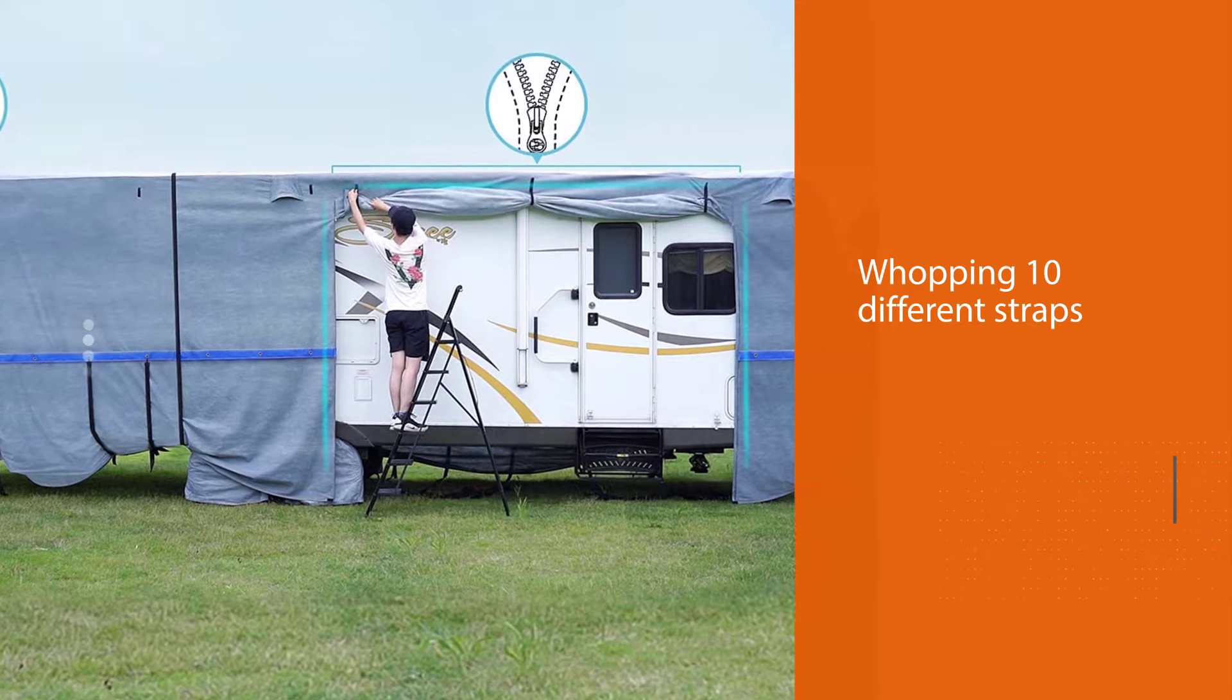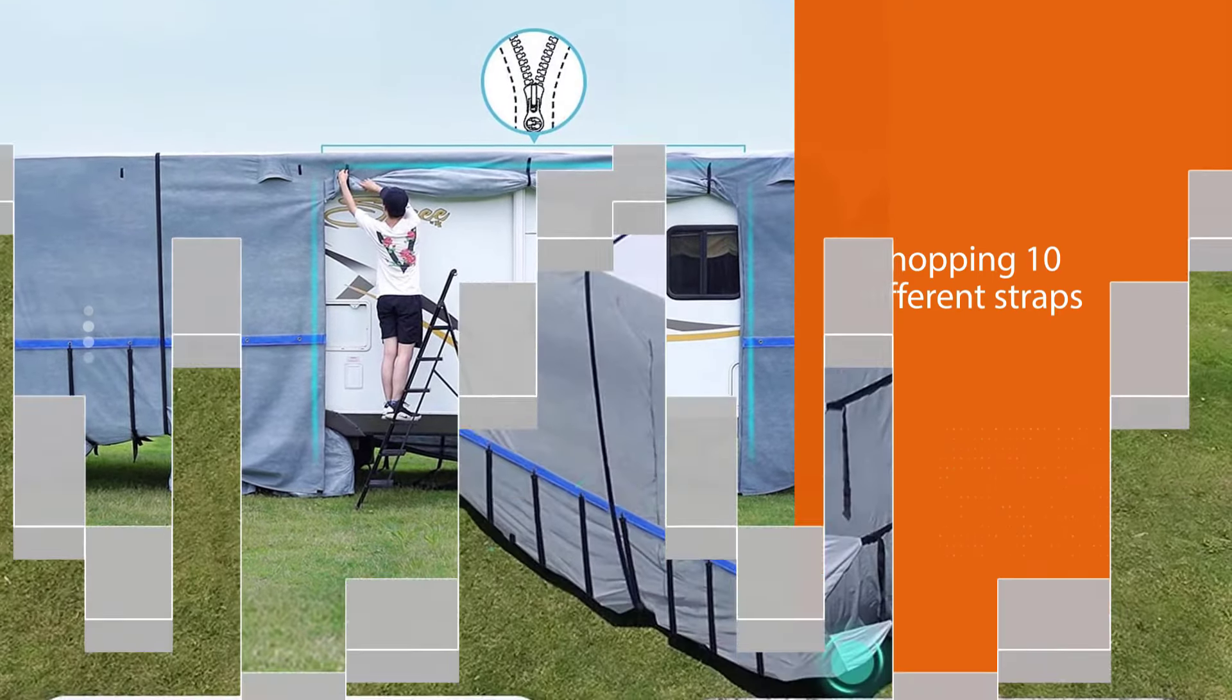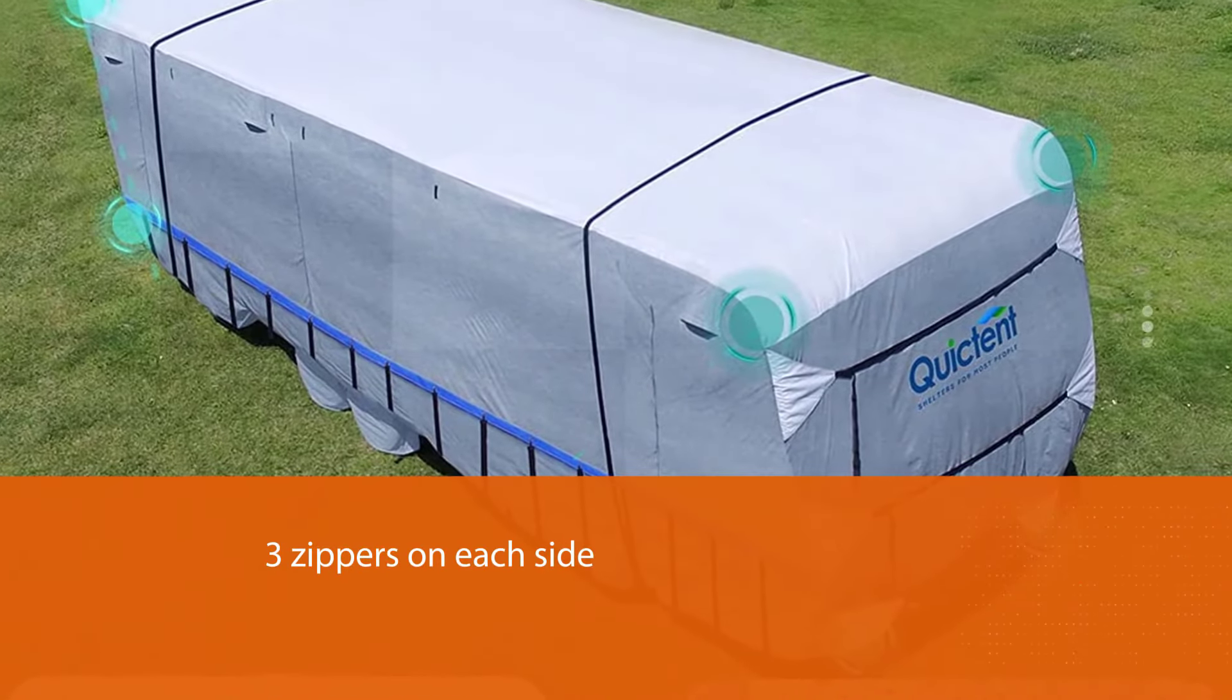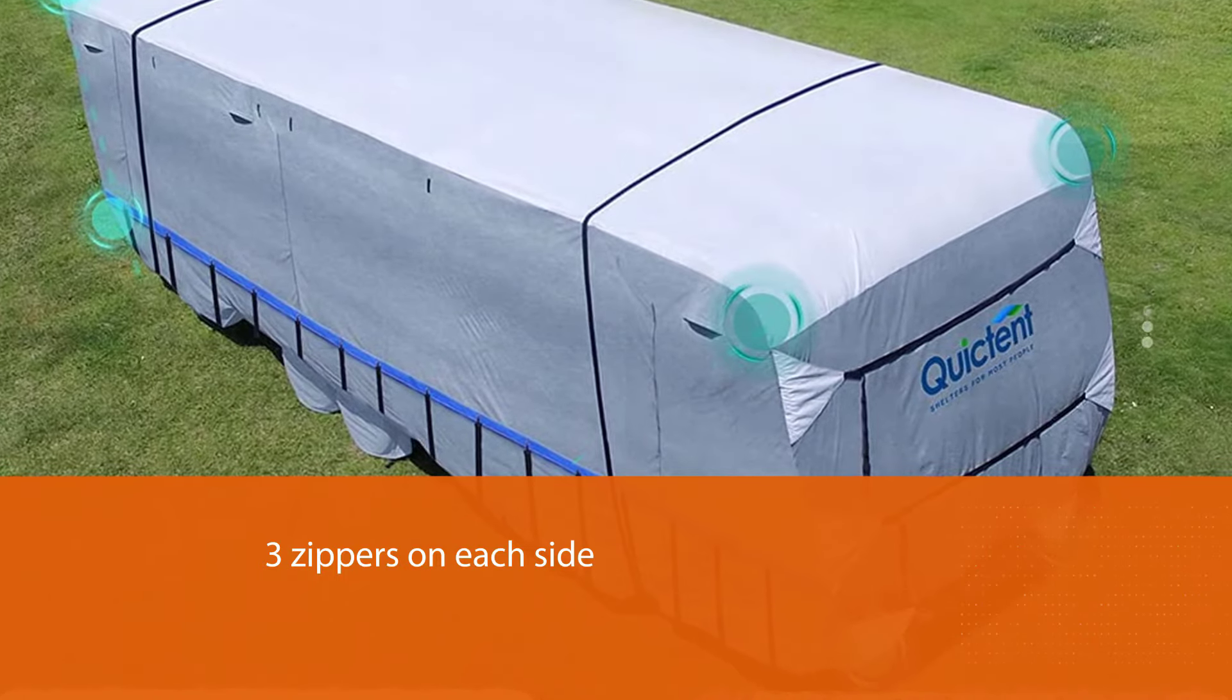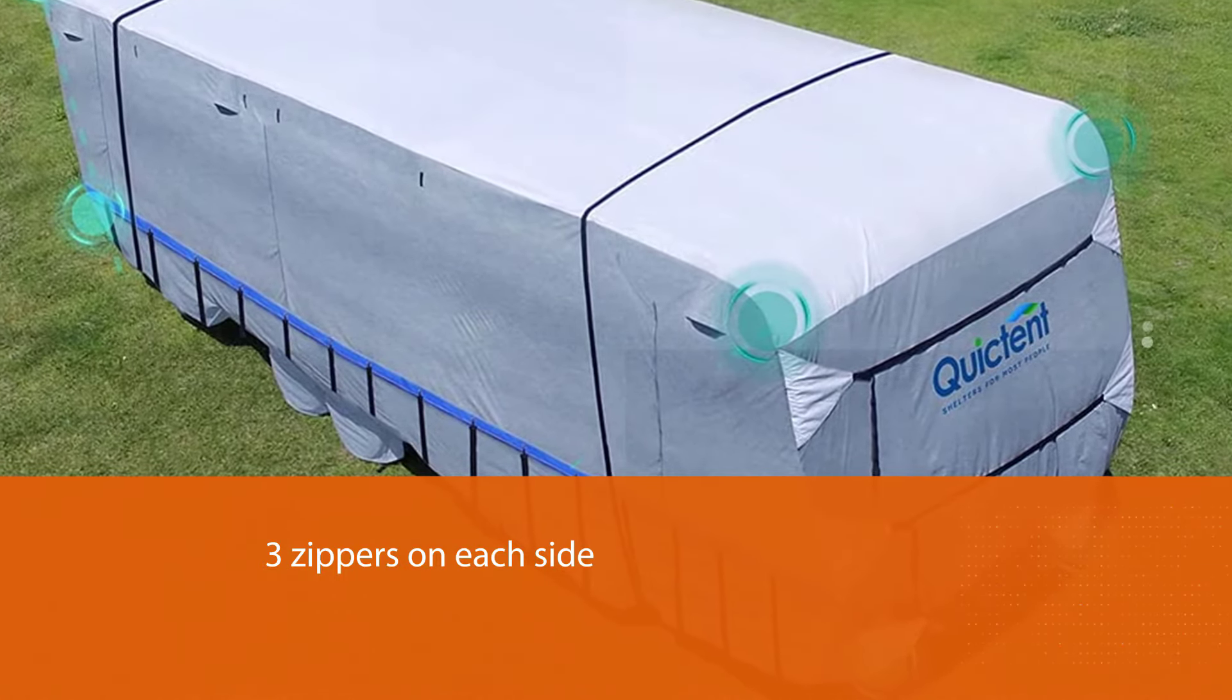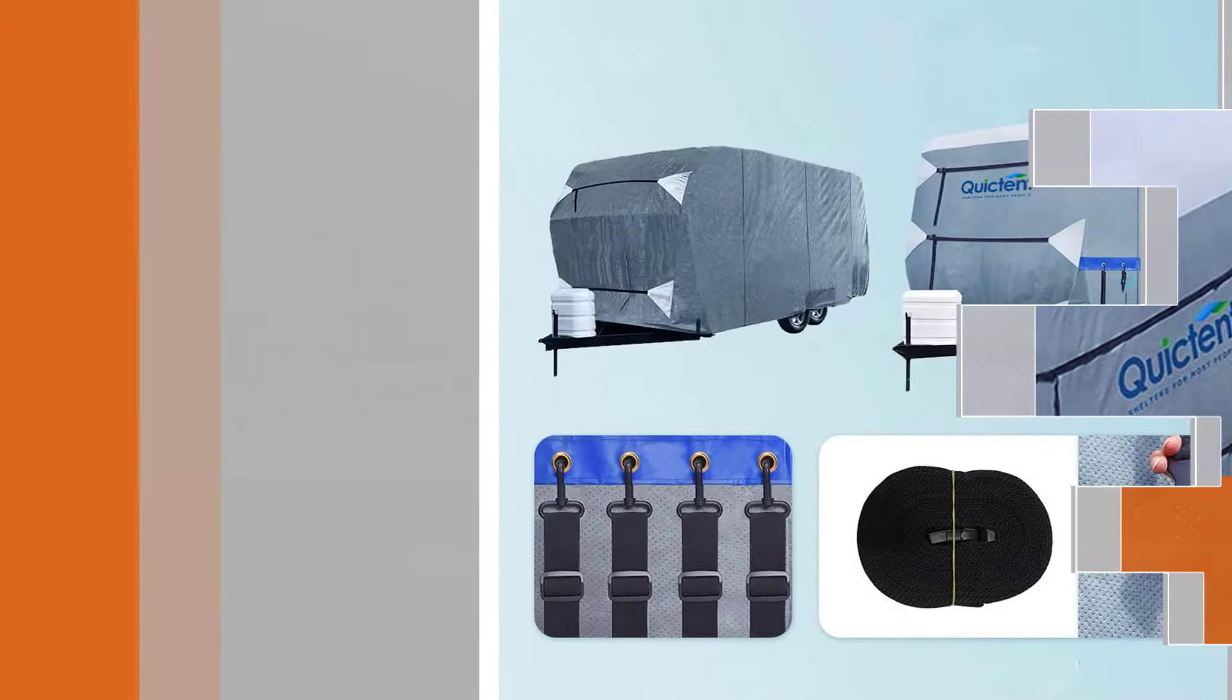There are three zippers on each side. Rollable zipper doors are designed for easy access to the RV doors and engine components to perform routine maintenance and inspections without the need of removing the RV cover.